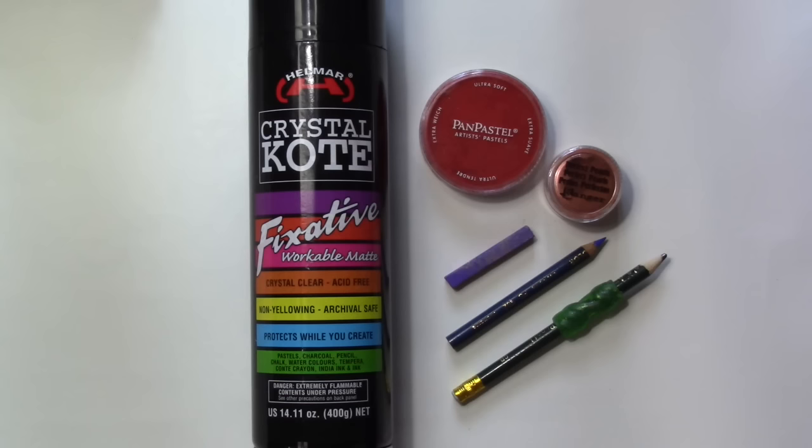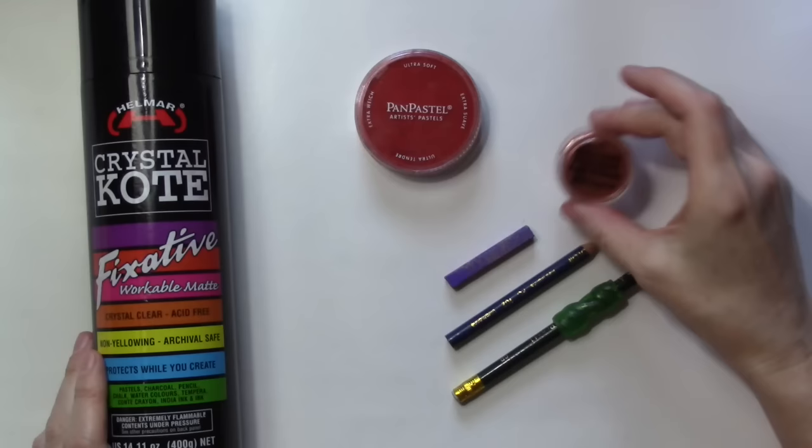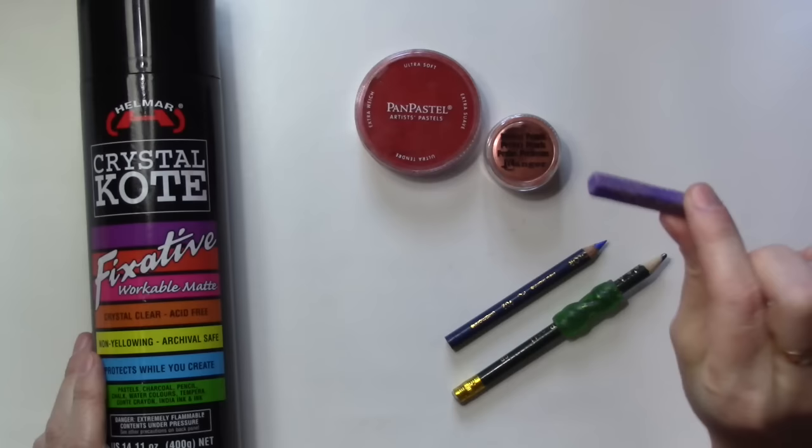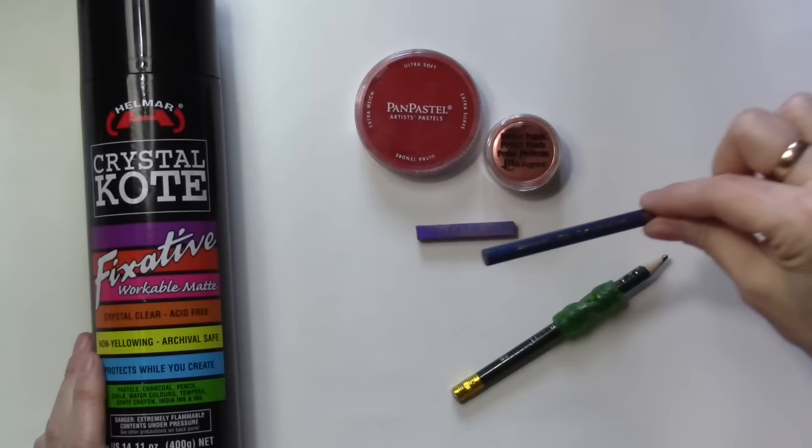But I do want to make sure that it works with the things that I frequently use. So I looked around and I chose some dry mediums that I might use frequently and might need a fixative for. I chose some pan pastels, Perfect Pearls powdered pigments, craft chalk, Prismacolor colored pencils, and a drawing pencil.